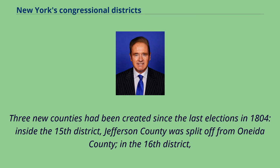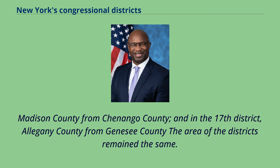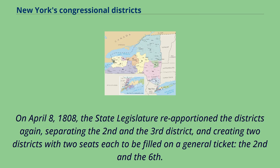Three new counties had been created since the last elections in 1804: inside the 15th district, Jefferson County was split off from Oneida County; in the 16th district, Madison County from Shenango County; and in the 17th district, Allegheny County from Genesee County. The area of the districts remained the same. On April 8, 1808, the state legislature reapportioned the districts again, separating the 2nd and the 3rd district, and creating two districts with two seats each to be filled on a general ticket, the 2nd and the 6th.